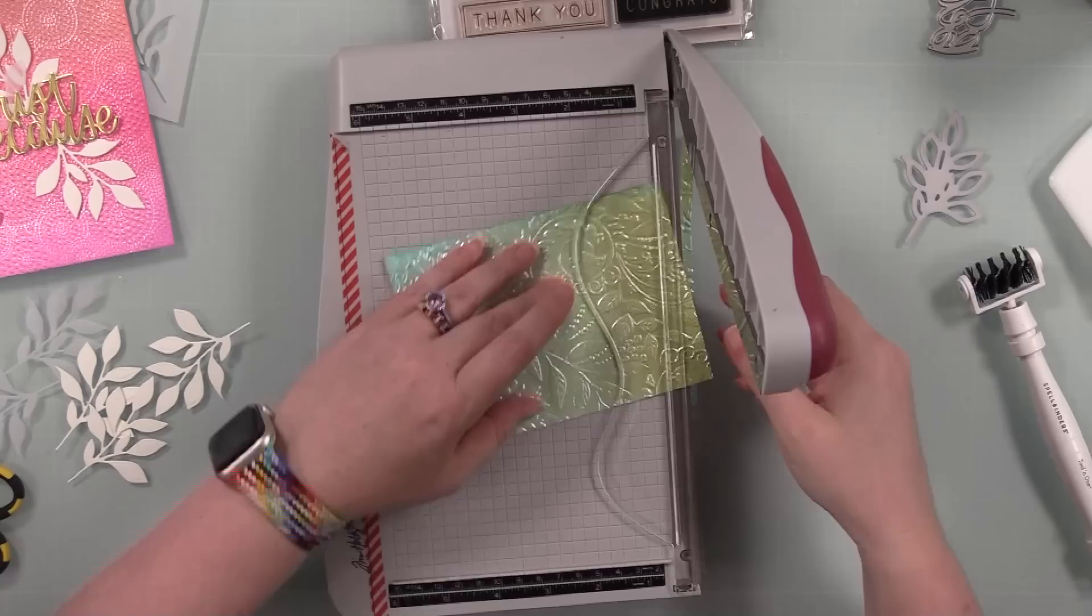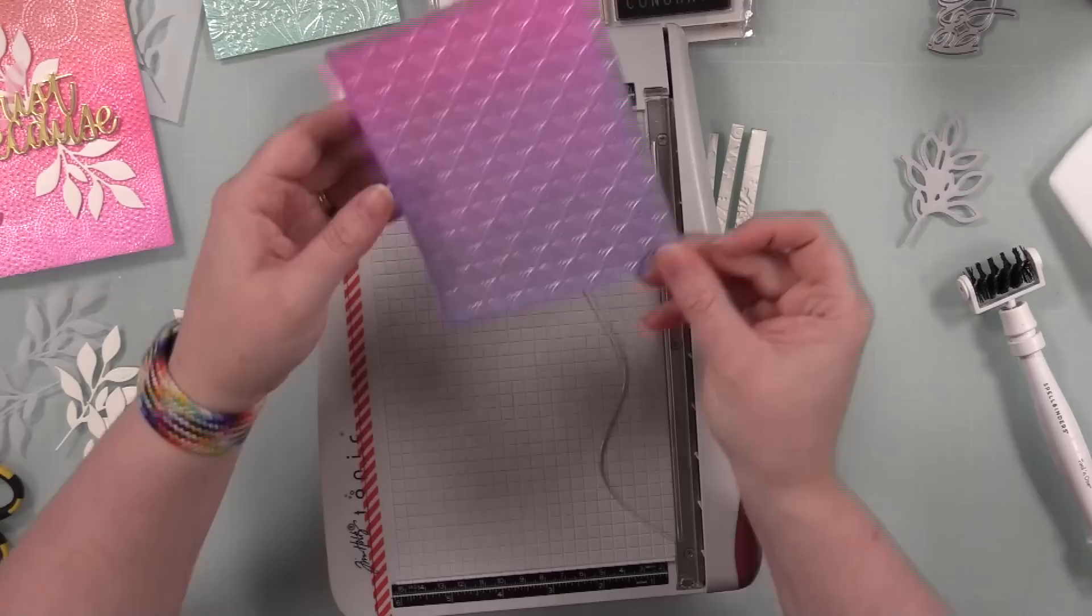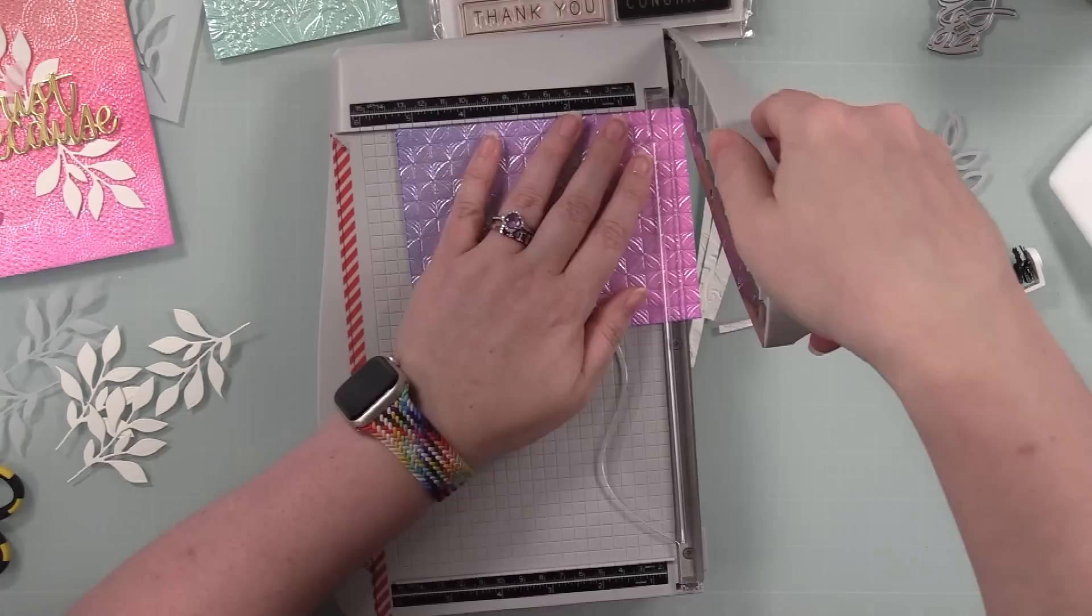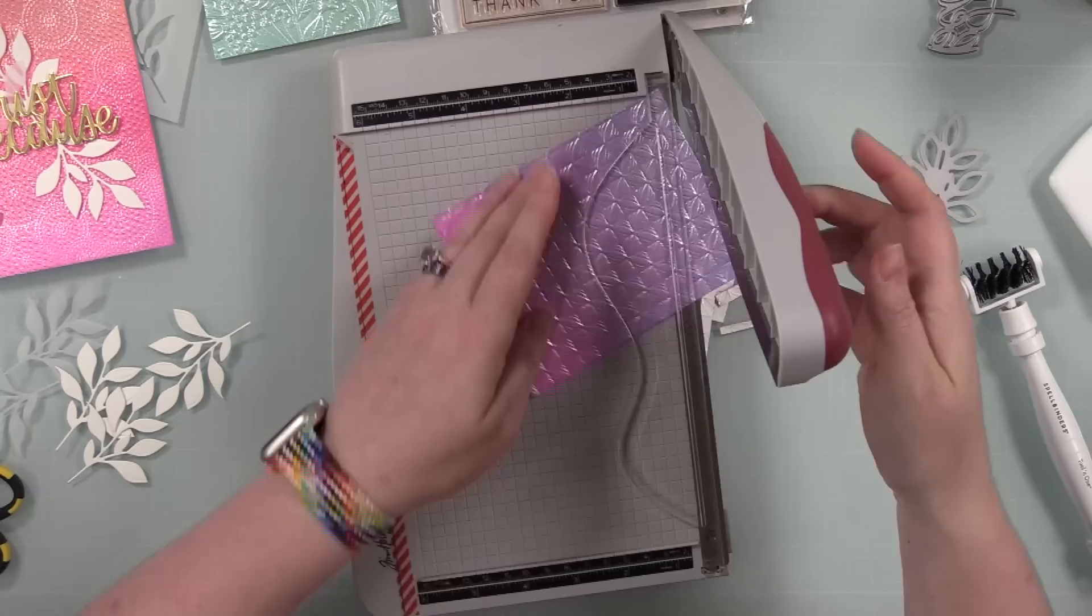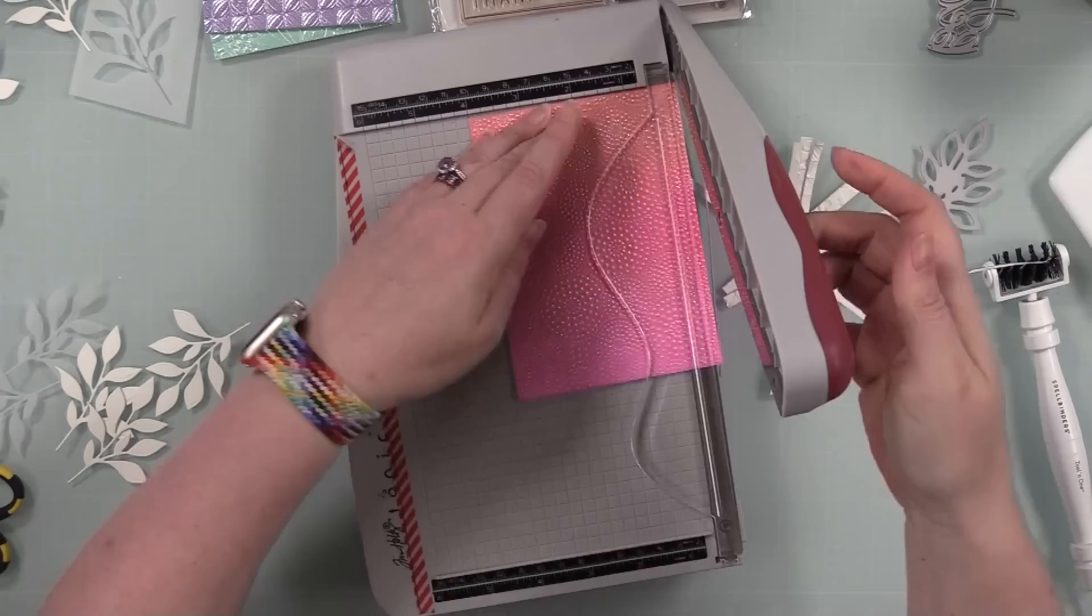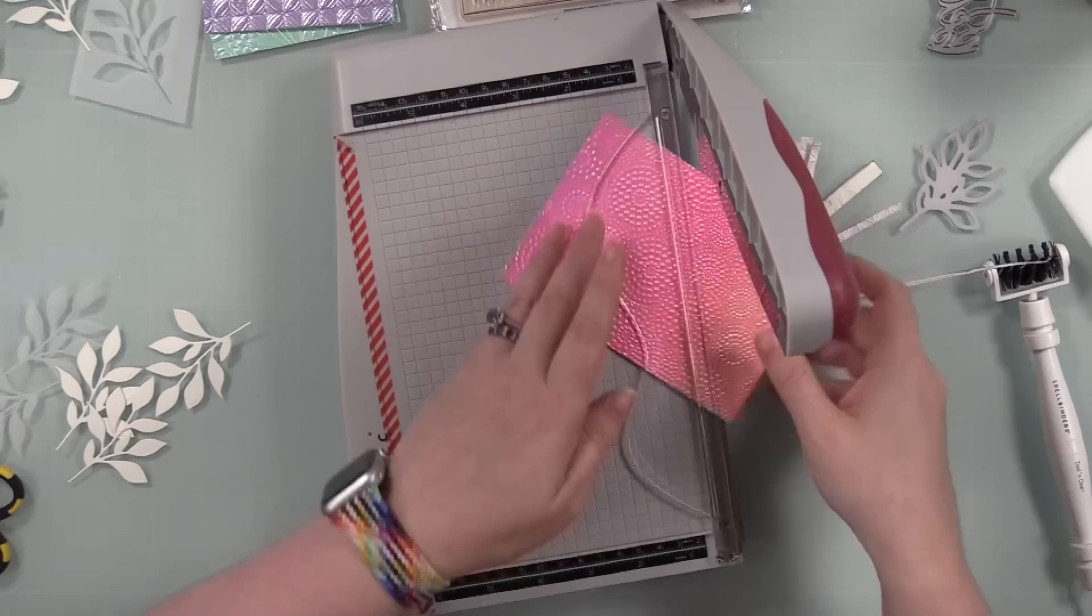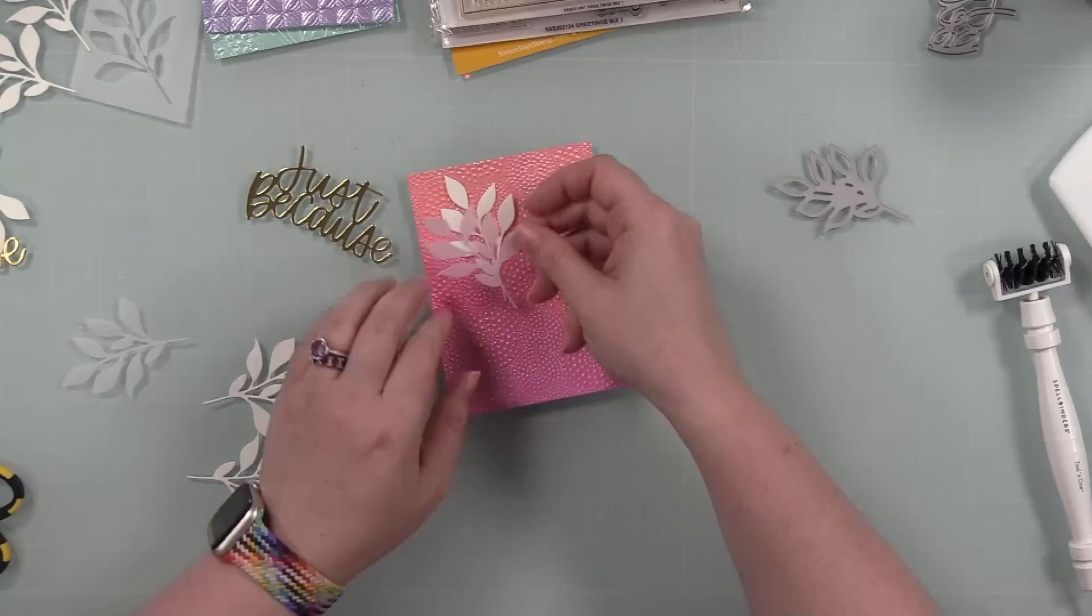So I stacked all the sentiments together. I then trimmed down these backgrounds so that they're going to be smaller than my A2 card fronts. So they're going to be three and three quarters by five is what they ended up being in the end. This way it just trimmed off some of the edges that I missed when I had lined them up in the embossing folders. Plus I just generally like having them smaller than the card fronts because then the card base gives it a nice little frame.